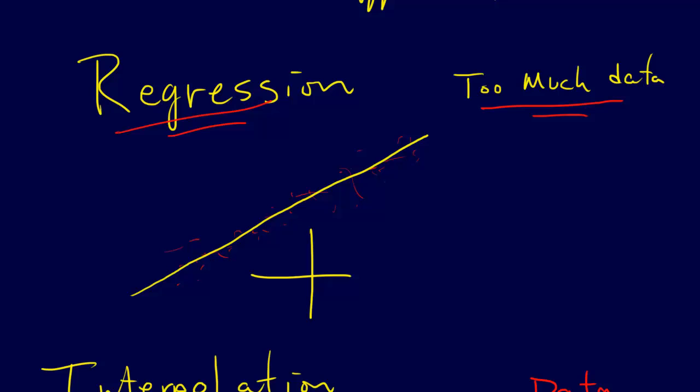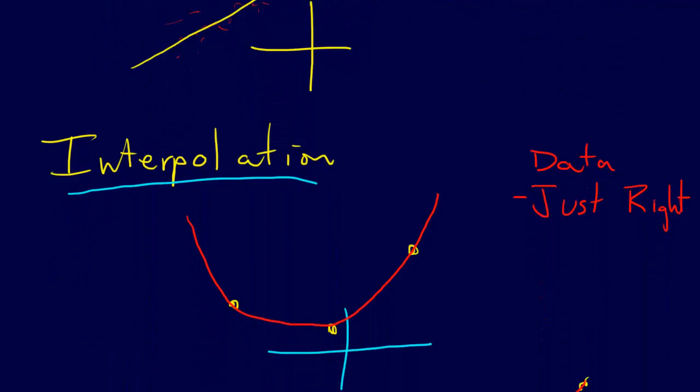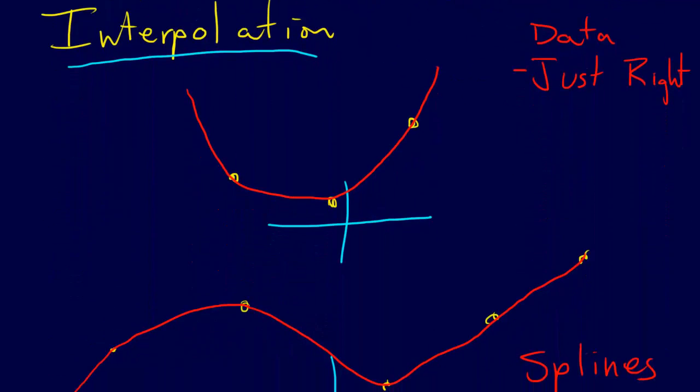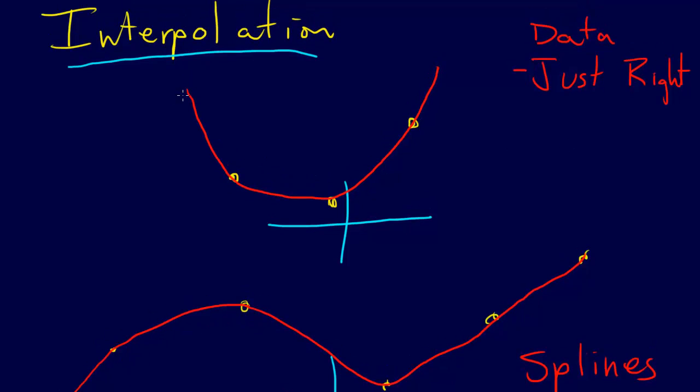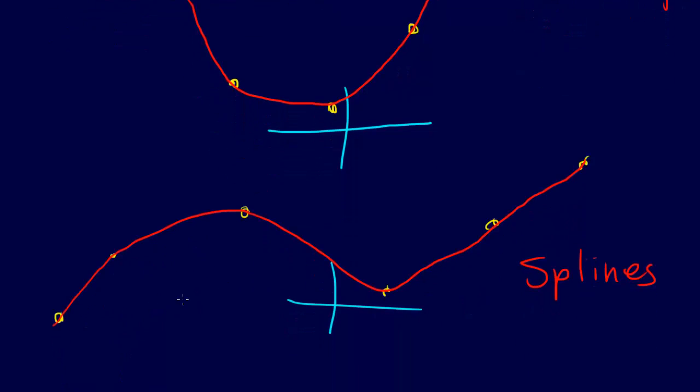In contrast with interpolation, you actually do go through all of the data points exactly, whether we're fitting a curve that has the same order as the number of data points, so the order of the curve is the same as the number of data points.